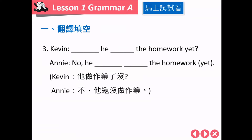第三题，一样给同学10秒。第一格答案是 has，因为 he 是第三人称单数。写作业的动词是 do homework，do, did, done。Has he done the homework yet? 回答：No, he hasn't done the homework yet.